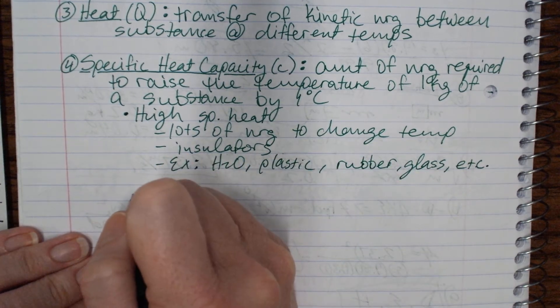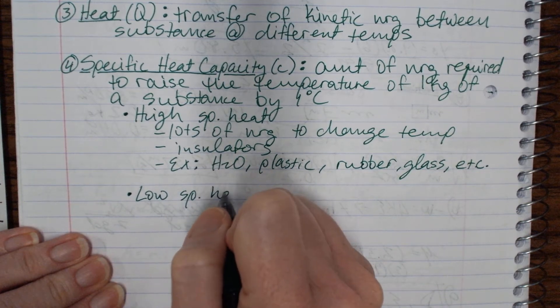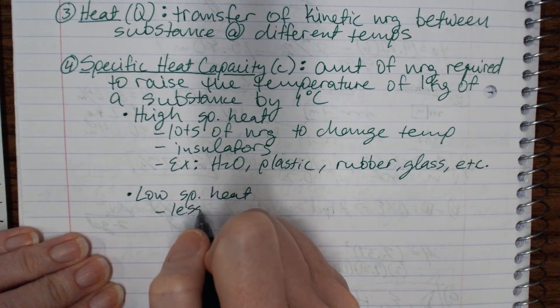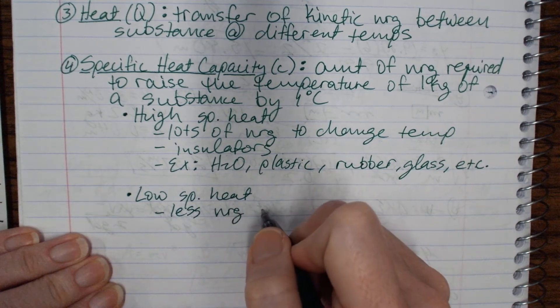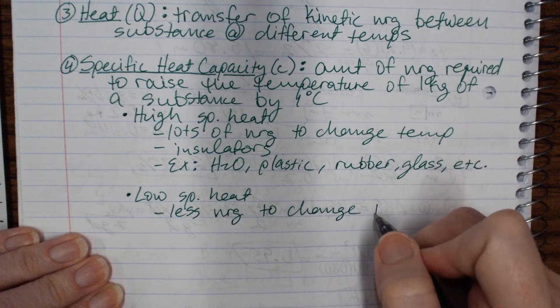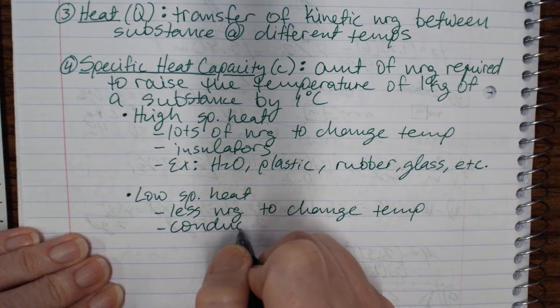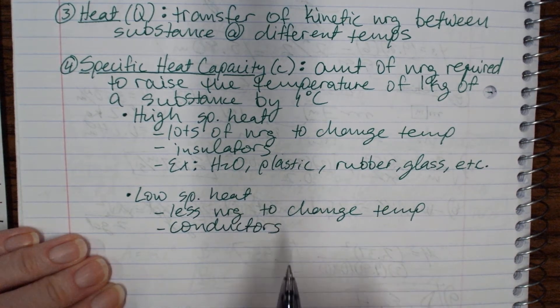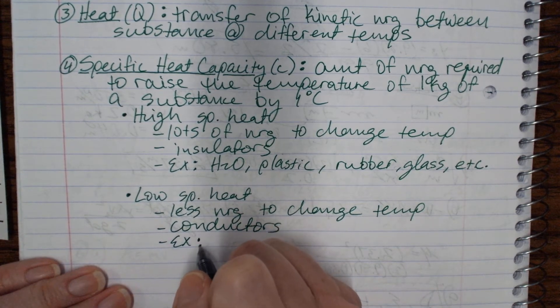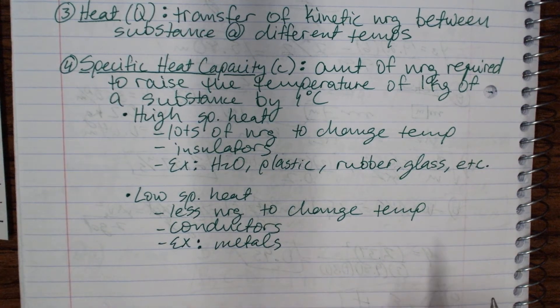If something has very low specific heat, then that means it requires less energy to change the temperature. These would be considered conductors. And the examples of these are basically all metals. All metals are good conductors of heat.